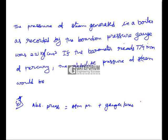The Bourdon pressure gauge gives gauge pressure, which is already given as 2.2 kg per centimeter square. We need to find the atmospheric pressure. Generally we know atmospheric pressure is equal to 1.01325 bar, but here the barometer reads 774 mmHg, so we calculate atmospheric pressure from that.